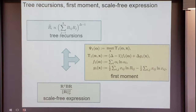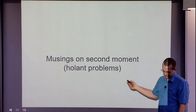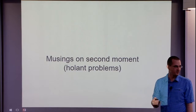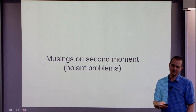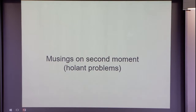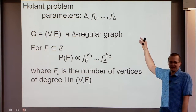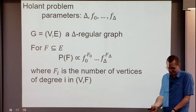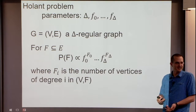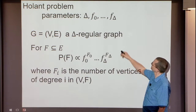I'm going to show you an example where the second moment calculation can actually be done at all maxima, even the local ones. I'll need to look at Holant problems, which are popular in exact counting but not so much in approximate counting — possibly because we don't have interesting negative results for them yet.